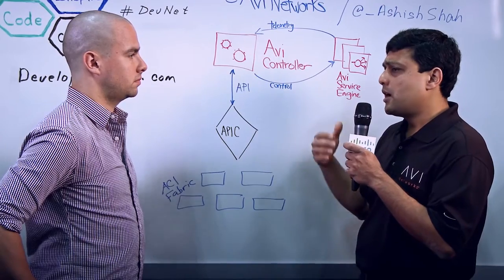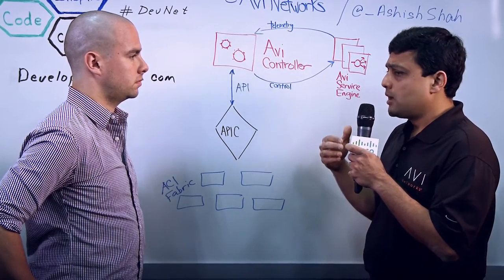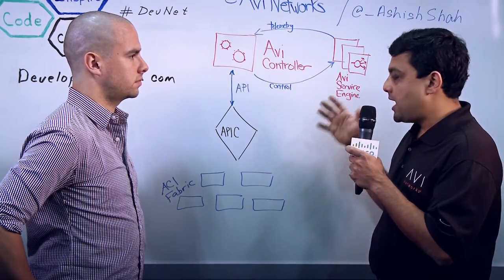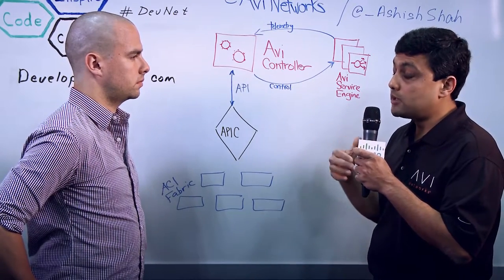And we have other customers around technology, around service providers, around financial services companies, using AVI and APIC for layer 2 to layer 7 automation.